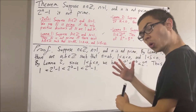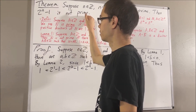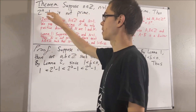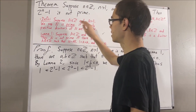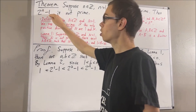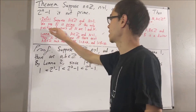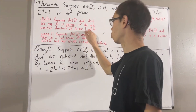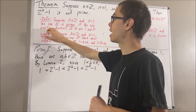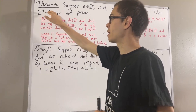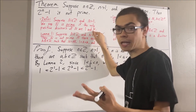Now remember, the whole goal is to show that 2 to the power of n minus 1 is not prime. To show that, we're going to look at the definition of a prime number. Taking capital N to be 2 to the n minus 1, we're going to show that it is not the case that the only positive divisors of 2 to the n minus 1 are 1 and 2 to the n minus 1. In other words, we're going to find a positive divisor of 2 to the n minus 1 that is neither 1 nor 2 to the n minus 1.